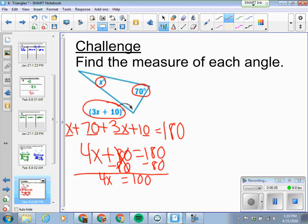So I'll combine like terms first. So my X and my 3X combine to make 4X. 70 and 10 combine to make 80. Put it together, still at 180. Two-step equation now. Subtract 80 from both sides. That's gone. 4X equals 100. Divide both sides by 4, and we get X equals 25.